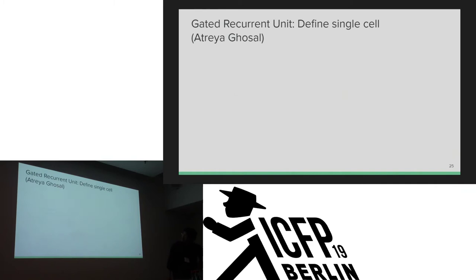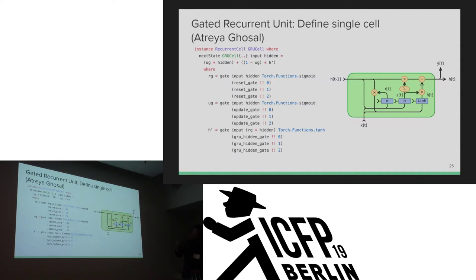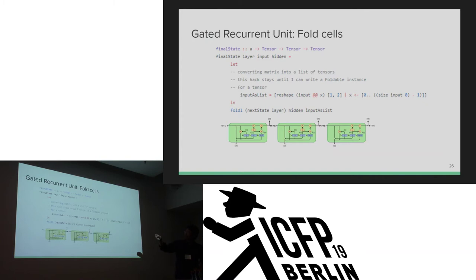Next, I'll show the recurrent network example. First, define a single cell like this. Then a fold function connects each cell. It's very simple.